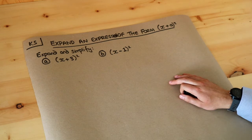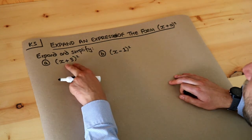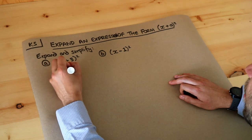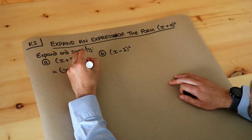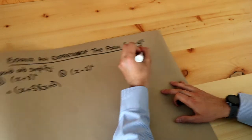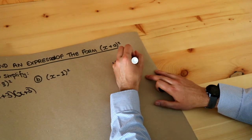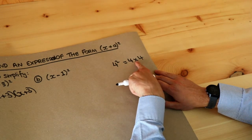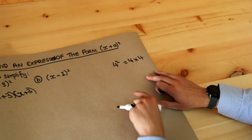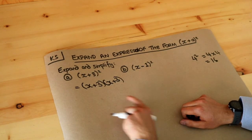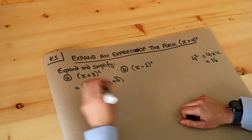In a previous video we saw how to expand out two brackets. Now, (x + 3) all squared means x plus three multiplied by itself. If I just had four squared, that means four times four — that's what squared means, you times the thing by itself, giving 16. So (x + 3) squared means (x + 3) multiplied by itself.